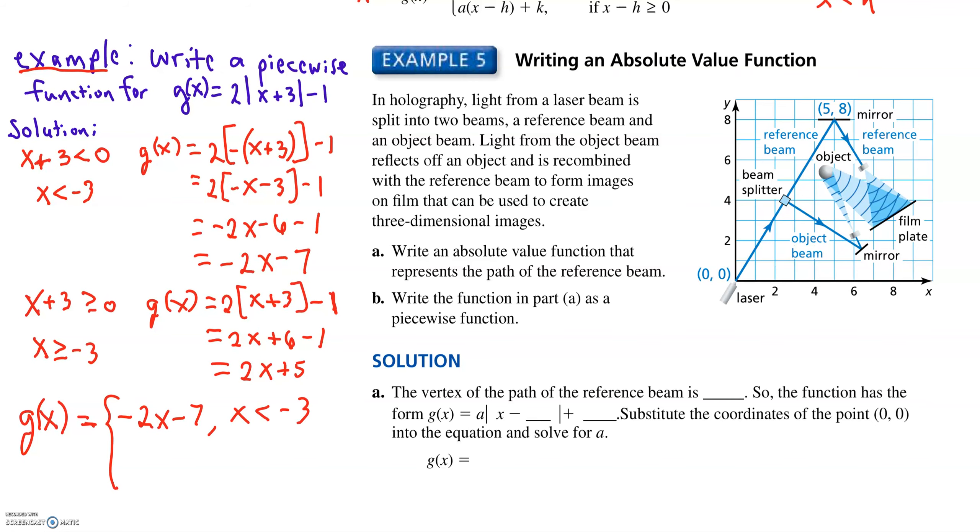if x is less than negative 3, and 2x plus 5, if x is greater than or equal to negative 3. And that's how we do piecewise definitions for absolute value functions.